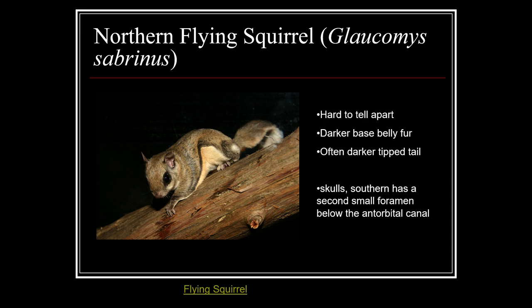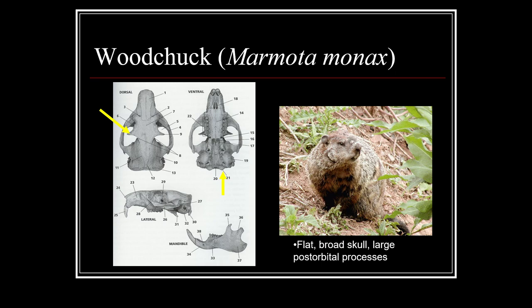The northern flying squirrel looks very similar to the southern — often a darker belly fur base and darker-tipped tail — but really you're going to look at skulls or their range. You could also use genetics to tell these two species apart. Note that there are some videos embedded within these slides; those are available online but won't be covered in this lecture, so go back and view those on your own.